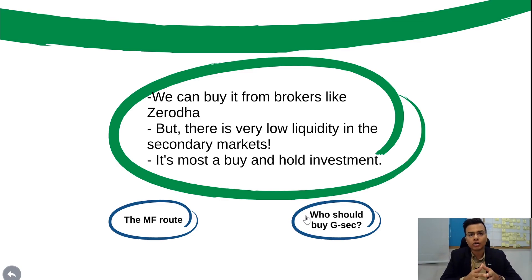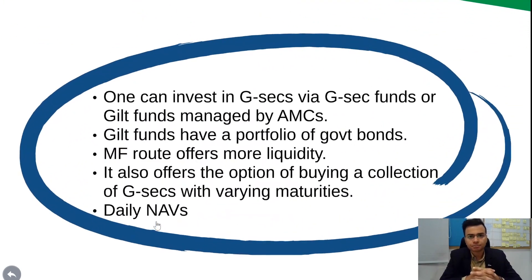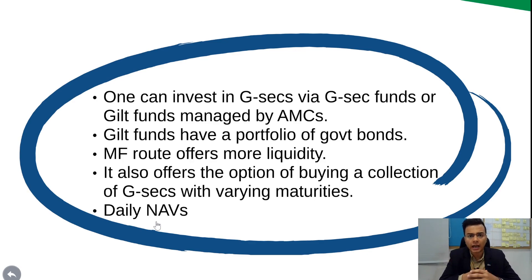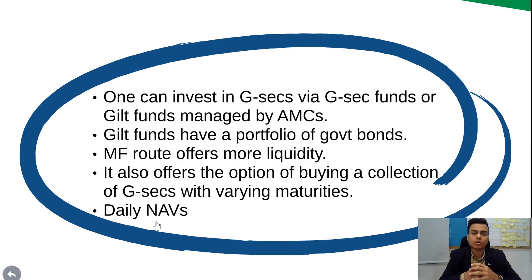There is another way to get exposure to government securities: the mutual fund route. There are GSEC funds or GILT funds managed by AMCs — asset management companies. GILT funds offer you a portfolio of government bonds, and the most important advantage is liquidity. Since mutual funds are required to publish their daily NAV, you can monitor the value of your bonds regularly. They also offer the option of buying a collection of GSECs with various maturities.